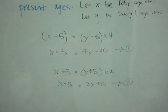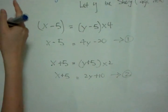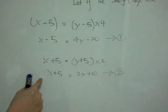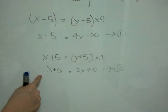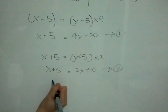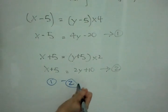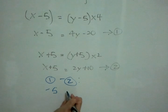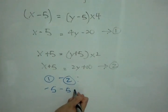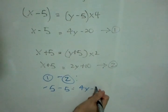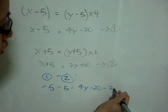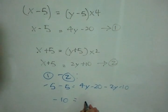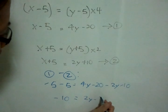Okay, so from these two equations, let's use elimination to solve. Okay, so equation one minus equation two: it will be minus five minus five equals four Y minus twenty minus two Y minus ten. That equals two Y minus thirty.